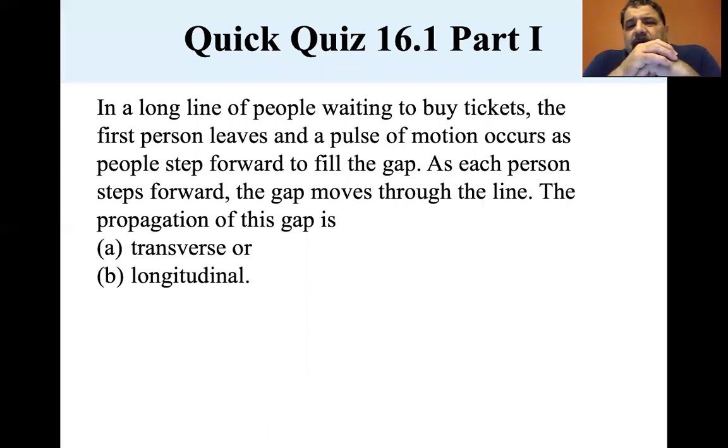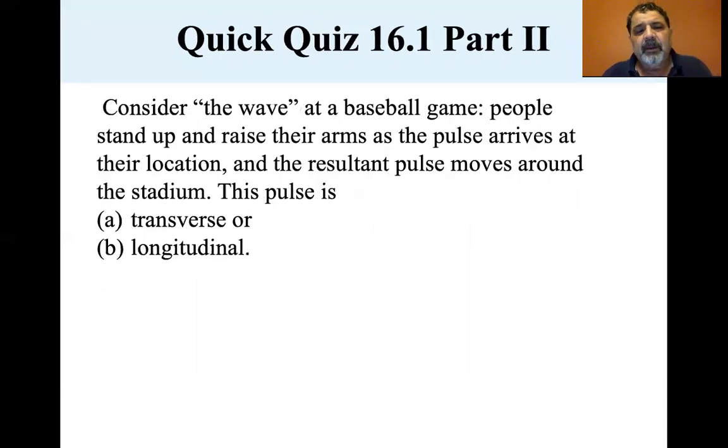If a long line of people is waiting to buy tickets, the first person leaves and a pulse of motion occurs as people step forward to fill the gap. As each person steps forward, the gap moves through the line. The propagation of this gap is transverse or longitudinal. Well, are the people going up and down? No, they're just going forward. So it's a longitudinal wave. You see the same thing if you're in traffic, stop at the light. As soon as the light turns green, not every car starts moving. There's a little bit of motion at the first car. Then the second car follows over there. That would be kind of like a longitudinal wave.